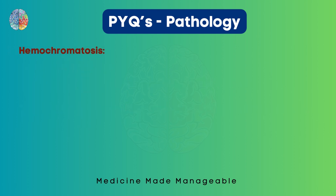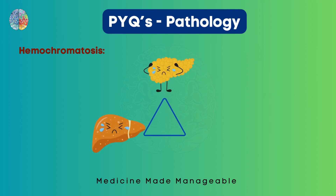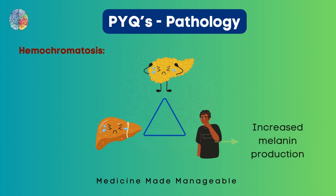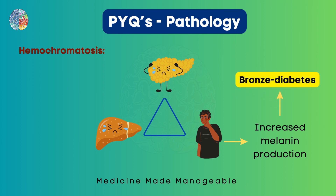But in hemochromatosis, it is characterized by a triad where the pancreas is affected, the liver is affected, and the skin is also affected. The dark tanning is seen because of increased melanin production. Because of the dark skin color and the pancreas being affected, this condition is also called bronze diabetes — bronze because of the skin color, and diabetes because the pancreas is affected and cannot produce insulin.